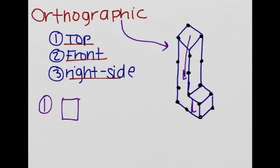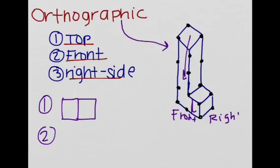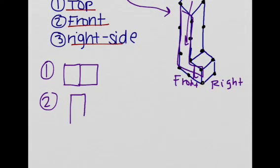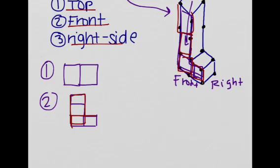Basically if I'm looking at it from a bird's eye view, I just get 2 squares. Now if I'm looking at it from the front — this is the front and this is the right — I just see an L-shaped figure. So it's going to look like this: I would have 2 squares here, and I have 3 squares vertically, just like I have here. So 3 squares vertically and 2 squares horizontally.